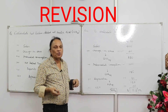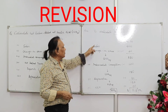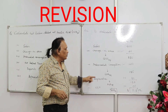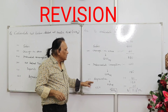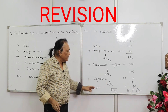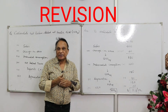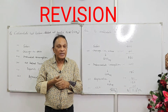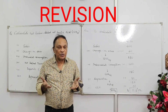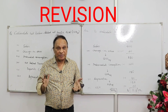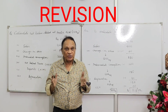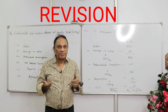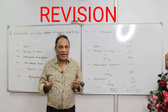Change in stock equals closing stock minus opening stock. Sales plus change in stock gives gross value of output at market price; minus intermediate consumption gives gross value added at market price; minus depreciation gives net value added at market price; minus NIT gives net value added at factor cost. Keep practicing — we'll do more numericals. That's all for today. Goodbye from Saddam. Don't forget to share, subscribe, like, and comment. Best of luck for exams!